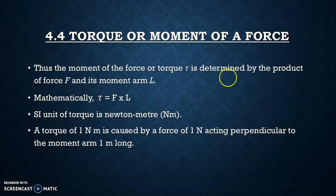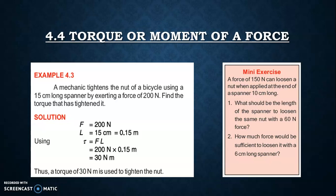Mathematically, torque = F × L. The SI unit of torque is the newton-meter. A torque of one newton-meter is caused by a force of one newton acting perpendicular to a moment arm of one meter. For example: a mechanic tightens the nut of a bicycle using a 15-centimeter long spanner by exerting a force of 200 newtons. Find the torque. Given: F = 200 N, L = 15 cm = 0.15 m. Applying the formula: torque = 200 × 0.15 = 30 newton-meters. You can also solve the mini exercise on the right-hand side.